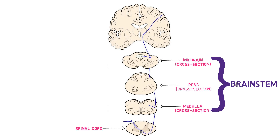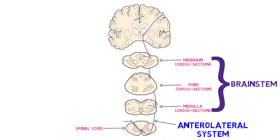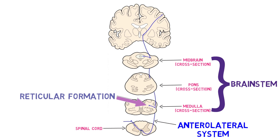There are several other pathways included in the anterolateral system, and they are thought to play unique roles in pain. The spinal reticular tract, for example, consists of a subset of spinothalamic tract fibers that terminate in both the thalamus and the reticular formation of the brain stem. It is thought to play a role in poorly localized pain and may be important to changes in attention in response to pain.